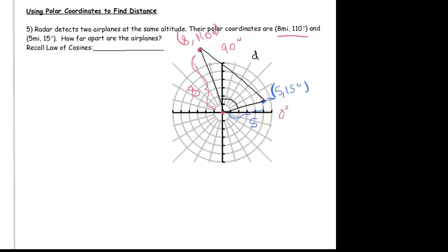All we need is the interior angle to make the law of cosines an appropriate tool. We actually do know that angle: the plane at (8, 110°) corresponds to a rotation of 110 degrees, and the other to a rotation of 15 degrees. The difference between them is the angle in the triangle, so that interior angle is 110 degrees minus 15 degrees, which is 95 degrees.